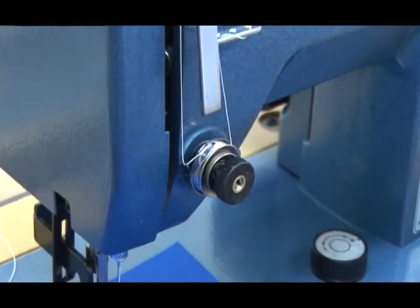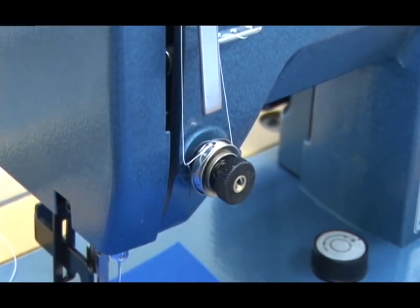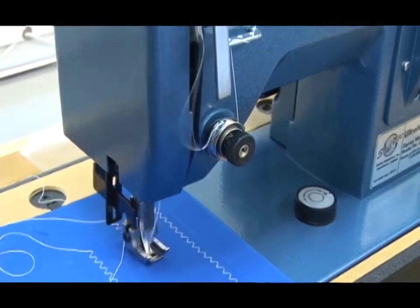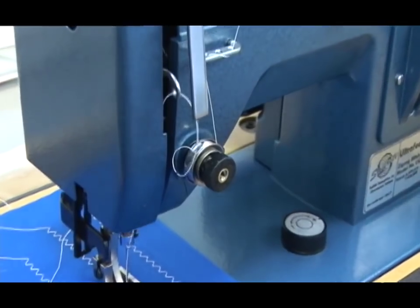Sometimes the machine will pull the thread into the discs on its own, but it typically won't for the first few stitches. And it is not here, you can tell, because it's not pulling it into the core.